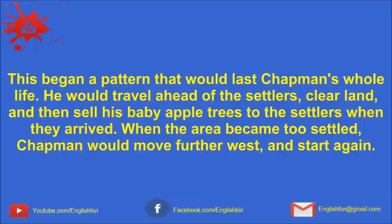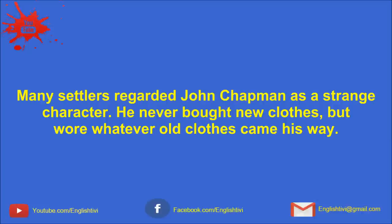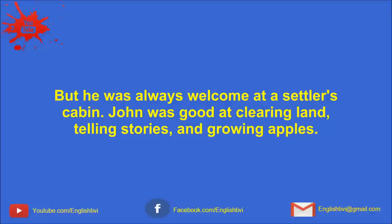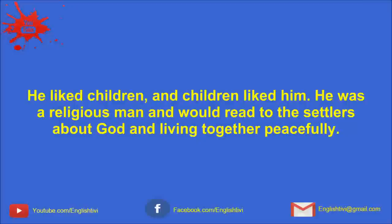On his way, he gathered leftover apple seeds from the cider mills that he passed. As usual, John walked barefoot, but as he traveled, snow began to fall. He tore strips off his coat and tied them around his feet. Then he made snowshoes out of tree branches. When he arrived in the west, he began to clear land and plant apple seeds. This began a pattern that would last Chapman's whole life. He would travel ahead of the settlers, clear land, and then sell his baby apple trees to the settlers when they arrived. When the area became too settled, Chapman would move further west and start again. Many settlers regarded John Chapman as a strange character.